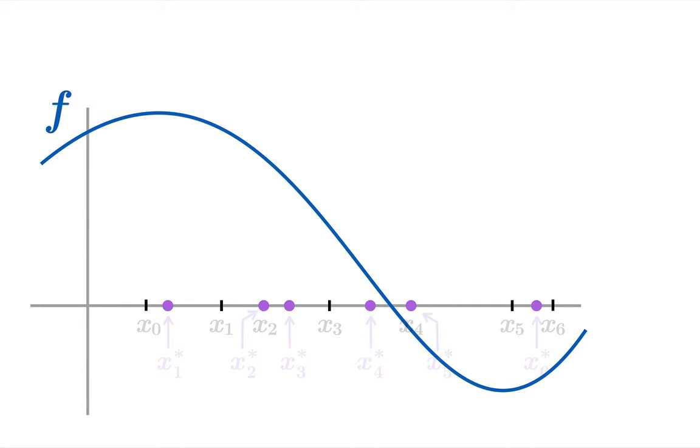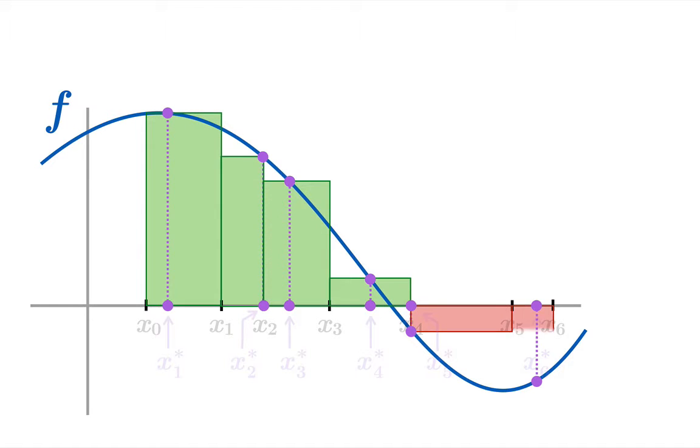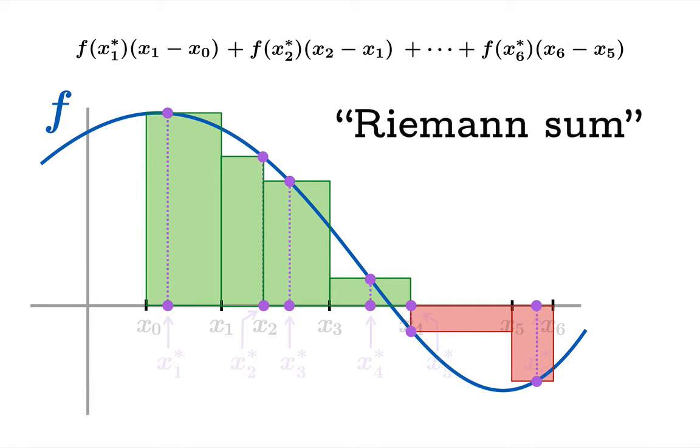Once we have our sampling arguments, now we plug them into the function to get some heights for rectangles that we base on the subintervals themselves. Now we can multiply together the heights and the widths to obtain a so-called Riemann sum.